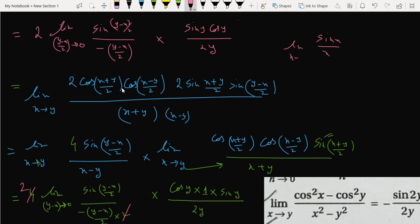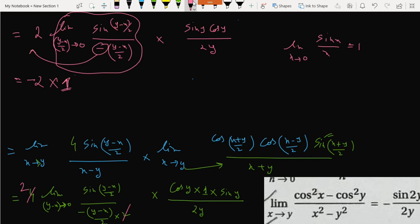So it will become, as we know this formula, it will follow this. So the remaining part will be 2 sine θ cos θ. 2 sine θ cos θ becomes sine 2θ.